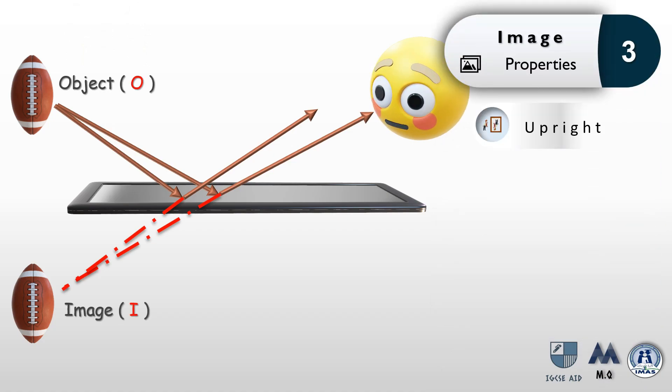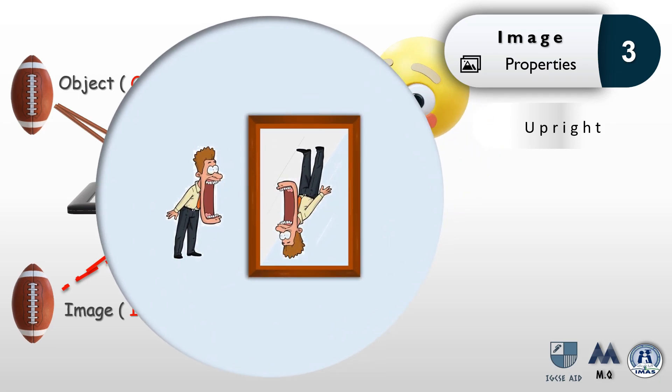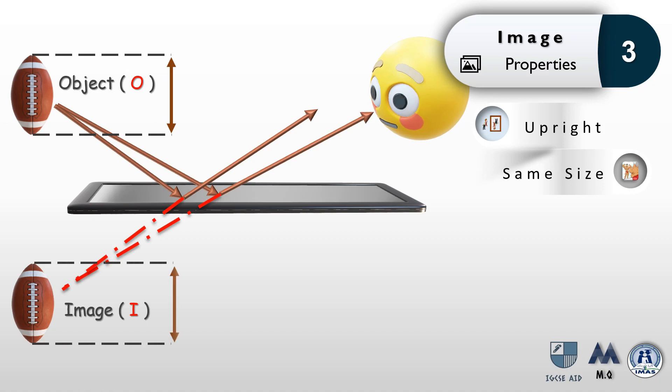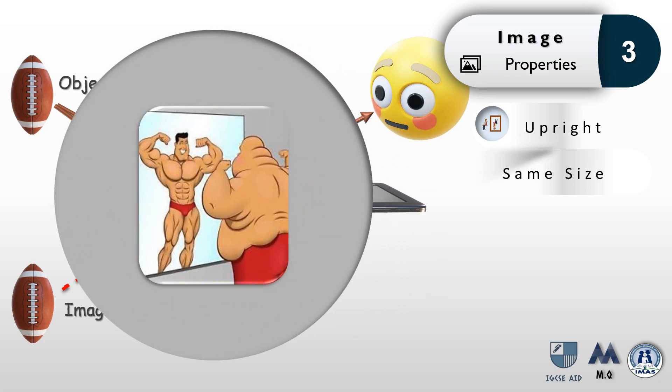Now let's look at some of the image properties. The first property is that the image is upright. Fortunately, when you look at a mirror, you don't see your feet inverted. For plane reflection, the object and the image are of exact sizes. This would not be the case in curved mirrors or lenses.